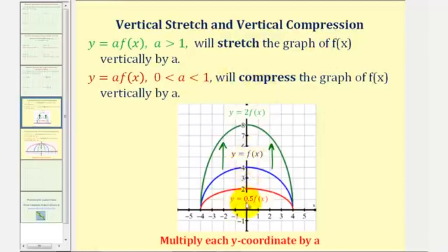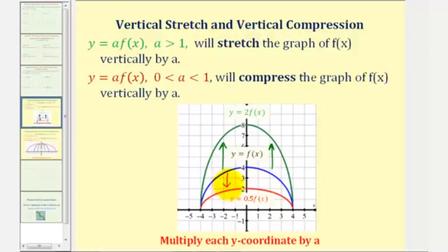Notice how the function values of f of x go from zero to four, but the function values of two times f of x go from zero to eight. Now let's consider when a is between zero and one — let's say a is zero point five, or one half. Notice the graph of y equals zero point five times f of x is vertically compressed, because we multiply each y coordinate of the parent function f of x by one half. Therefore we can say the graph of zero point five times f of x would vertically compress f of x by one half.